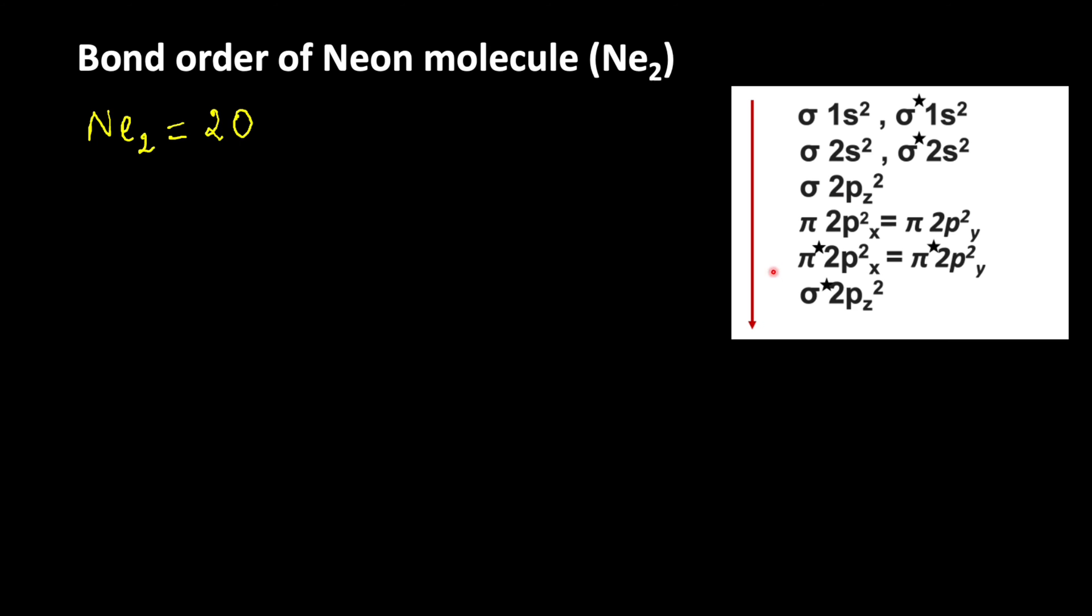Based on these informations, let us write the electronic configuration of neon molecule. Sigma 1s2, sigma star 1s2, sigma 2s2, then after that sigma star 2s2. After sigma star 2s, the electron enters into sigma 2pz2.